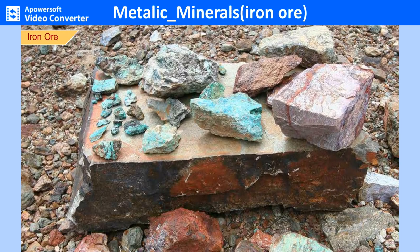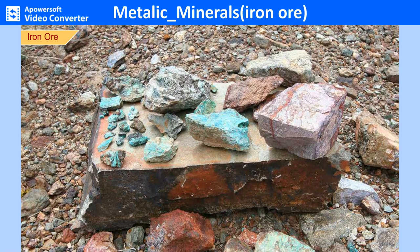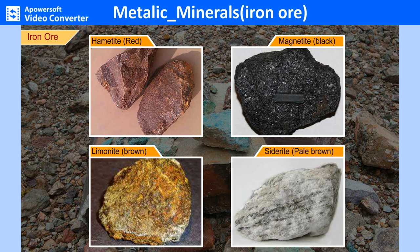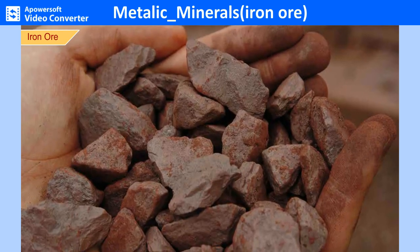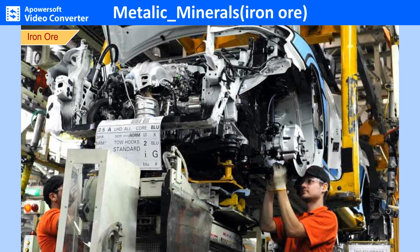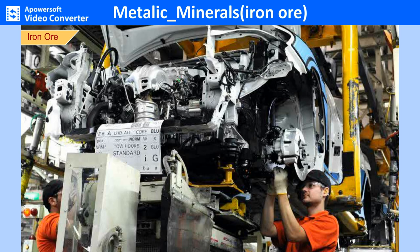Iron ores occur in all types of rocks and in various kinds of environments. Common types include hematite (red), magnetite (black), limonite (brown) and siderite (pale brown). Raw iron is combined with other elements to form an alloy; the strengthened and hardened steel is then used for construction and manufacture of cars, trucks, trains and train tracks. China, Brazil, Australia, Russia and Ukraine are the five biggest producers of iron ore. India, the US, Canada and Kazakhstan are other major producers, and together these nine countries account for 80% of world iron ore production.